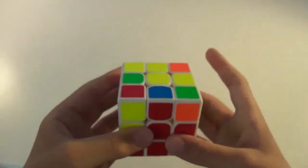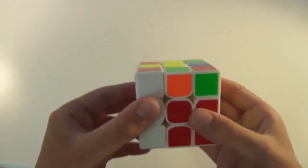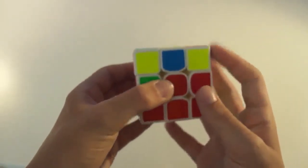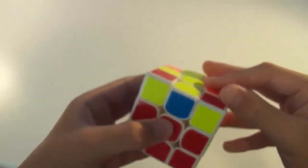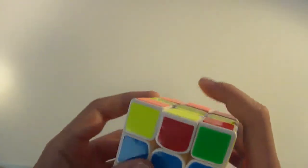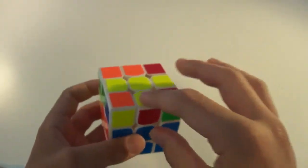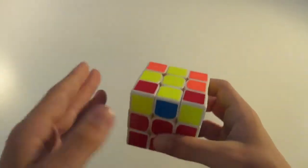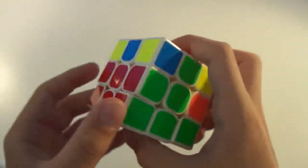So, the algorithm for this is U prime, L prime, U, L, U, F, U prime, F prime. So, that would solve both cases, whether the edge is matching with the color, and the color on top is on the right side, or the edge is matching the front center, and the color on top is on the left side.